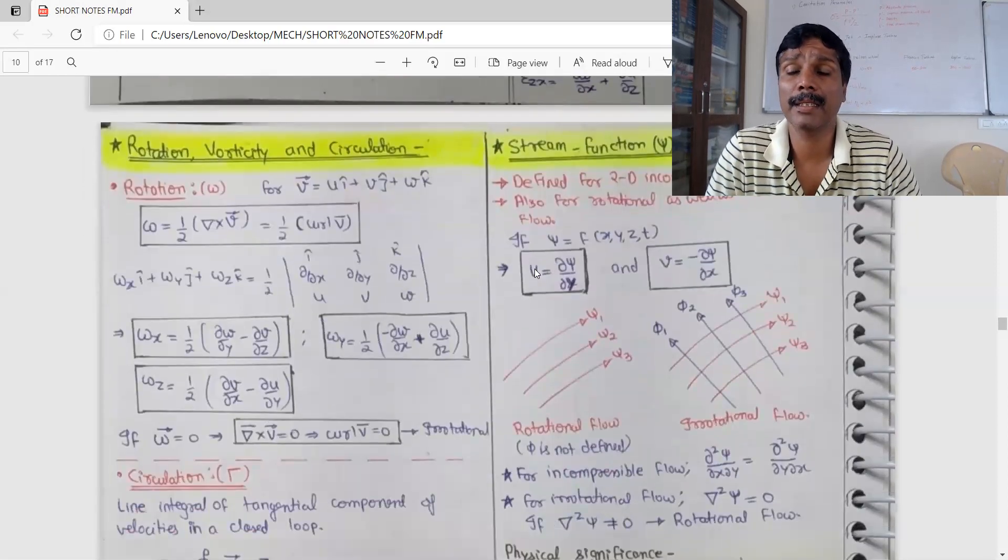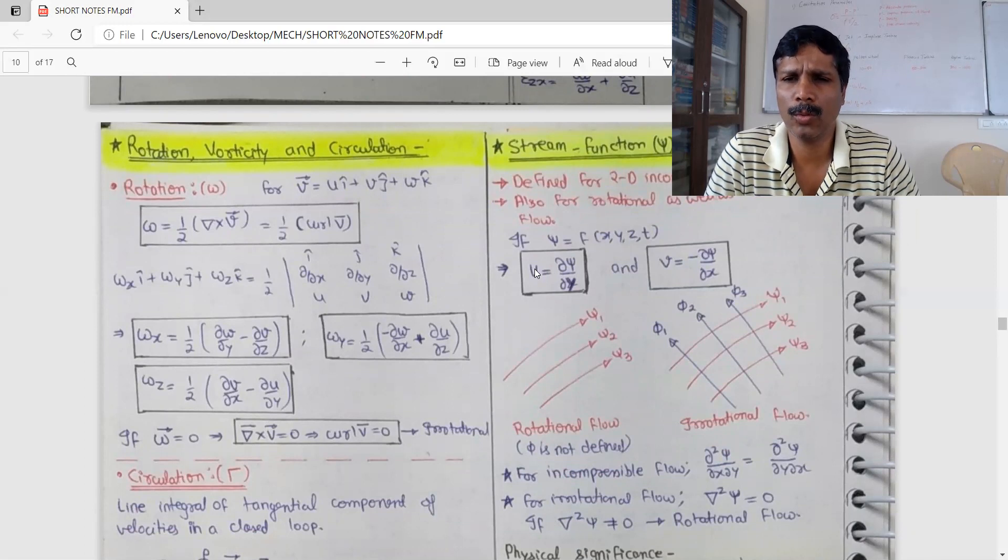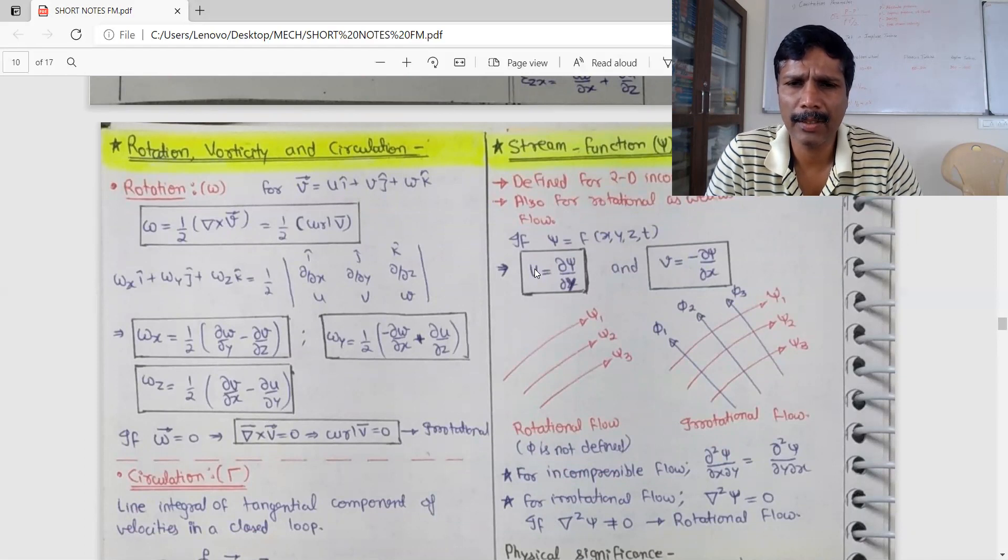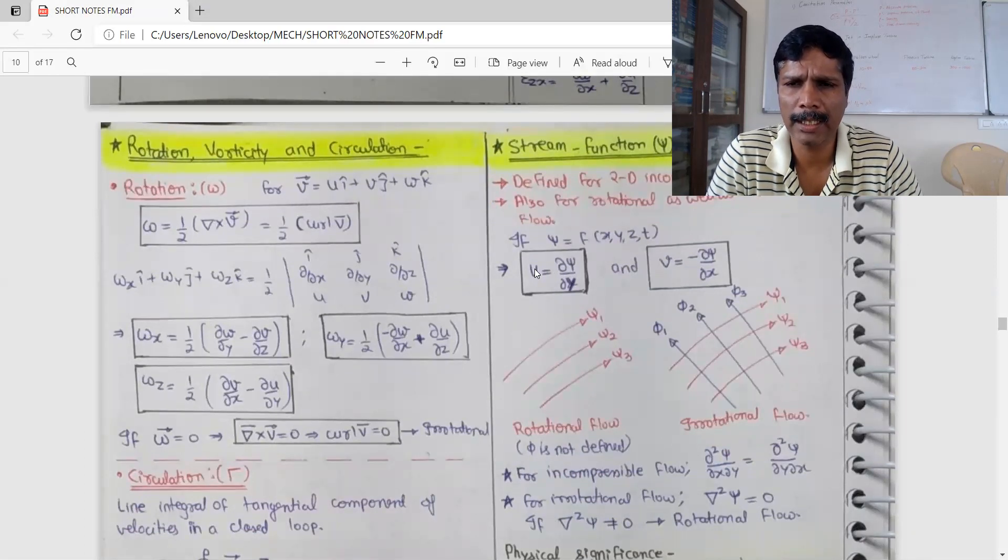Now, streamline and potential line is where it is. Rotational flow to define: psi exists, pi is not defined. First diagram psi is not defined. That is the rotational flow. psi and pi exist. That is the irrotational flow.